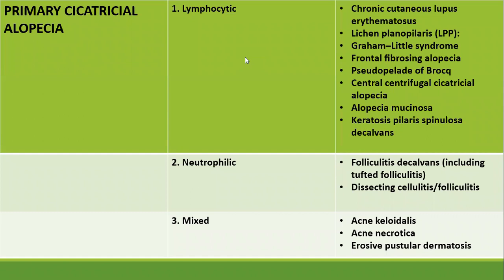This classification is taken from the Rook Textbook of Dermatology, which classifies primary cicatricial alopecias as those mainly of lymphocytic origin, where the main inflammatory cells are lymphocytes. These conditions include chronic cutaneous lupus erythematosus, lichen planopilaris and related syndromes — Graham-Little syndrome and frontal fibrosing alopecia — then pseudopelade of Brocq, central centrifugal alopecia, alopecia mucinosa, and keratosis pilaris spinulosa decalvans.